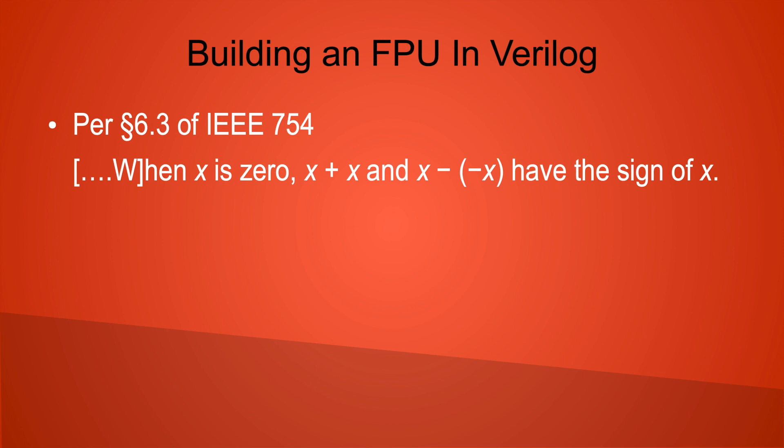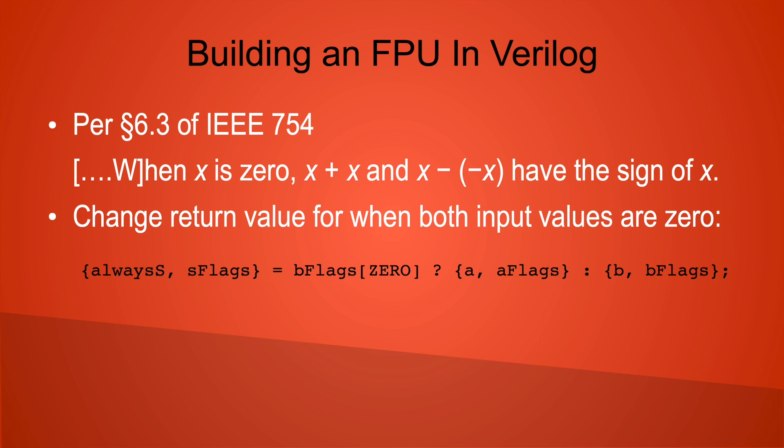One last code cleanup. In a previous video, I cited section 6.3 of the IEEE 754 standard which says: when x is 0, x plus x, and x minus negative x, have the sign of x. I've changed the way the value is selected when both input operands are 0. It seemed to me that this more correctly implements the intent of section 6.3. If you have a different opinion, please feel free to explain your position in the comments.